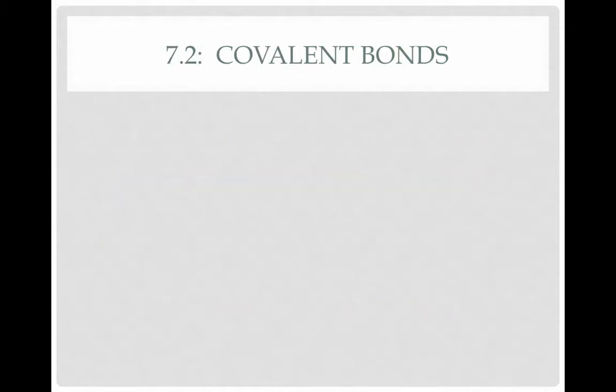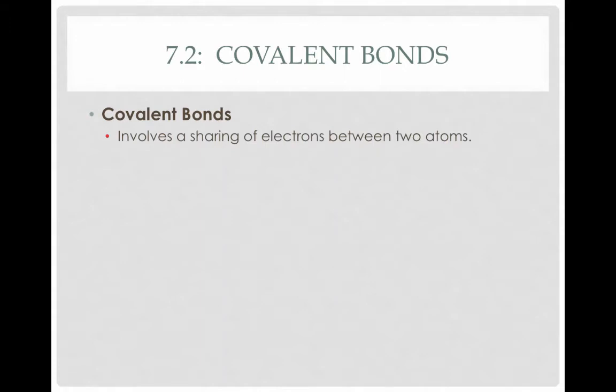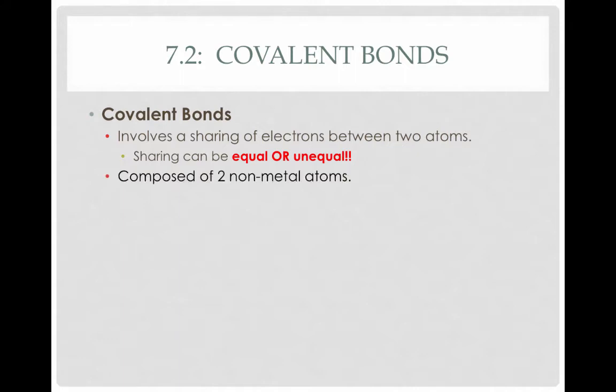Let's go back and review quickly. When we're talking about Lewis structures, we're talking about molecules held together with covalent bonds. Recall that covalent bonds involve a sharing of a pair of electrons between two atoms, as opposed to a transfer of electrons as in ionic bonds. The sharing of these electrons can be equal or unequal. Covalent bonds form between two non-metal atoms.